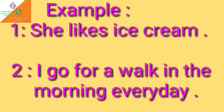Example 1: She likes ice cream. Example 2: I go for a walk in the morning every day. In example 1, she is a singular subject, and with a singular subject we use a singular verb. So here, 'likes' is a singular verb in present tense. In example 2, I go — 'I' is considered a plural subject, so we use the base form of the verb, that is 'go'.